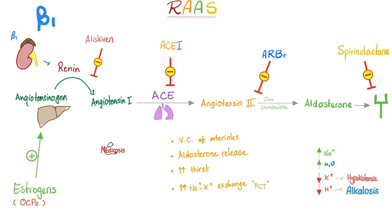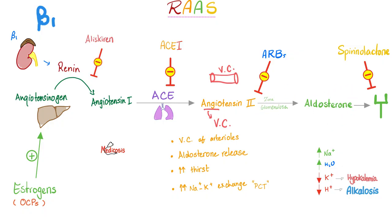Angiotensin 2 has two functions. Function number one: it increases tension in the blood vessels — vasoconstriction — which raises your blood pressure because you just lost lots of blood after the car accident. Function number two: angiotensin 2 releases aldosterone from the zona glomerulosa.